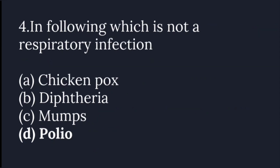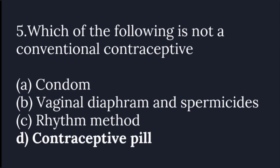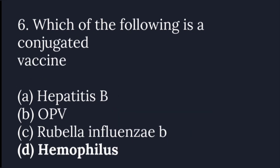Which of the following is not a respiratory infection? Which of the following is not a conventional contraceptive method? The answer is contraceptive pills. Which of the following is a conjugated vaccine? The answer is Haemophilus.